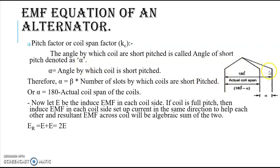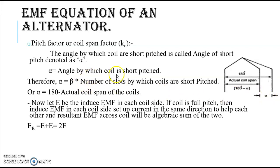Consider this coil with coil side 1 and coil side 2. The actual pole pitch distance is 180 degrees electrical, but our coil is not connected at the full pitch point — the second part of the coil is connected at a shorter span. This is the actual coil span, and hence our coil is short pitched by angle alpha. Alpha equals beta multiplied by the number of slots by which the coil is short pitched.